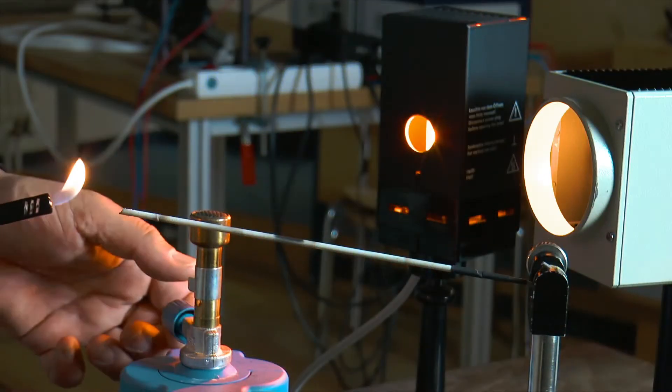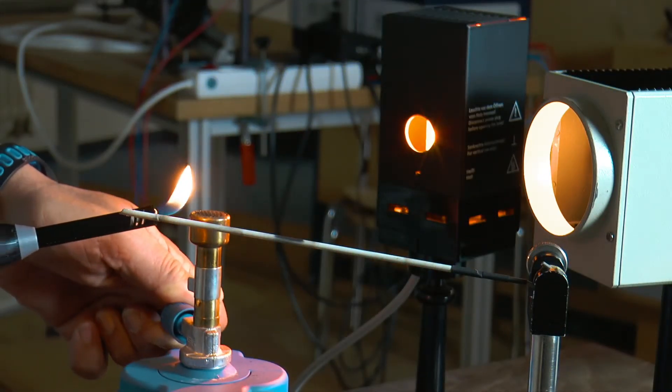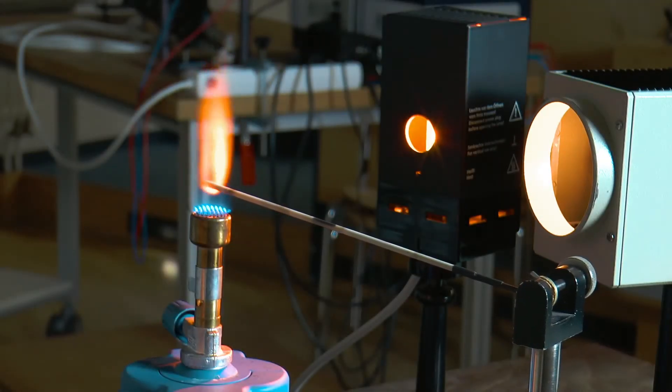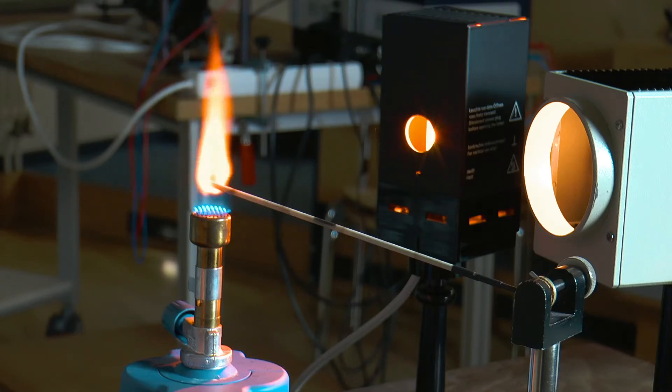If the Bunsen burner is ignited first, a colorless and transparent flame is produced. In the shadow of both lamps, the flame is almost invisible because the light of both lamps penetrates the flame unhindered. With the help of a long ceramic rod, some common salt is now added to the flame. Due to the sodium contained in the salt, the flame turns yellow.